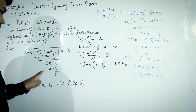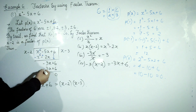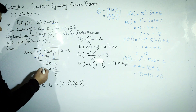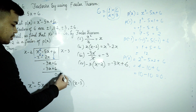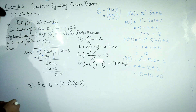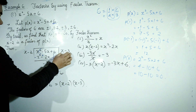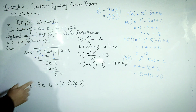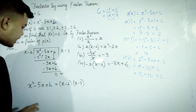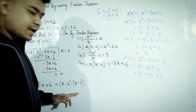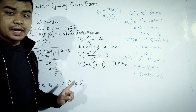We get each phase of the equal function 6. The remainder is zero. So we can factorize x² - 5x + 6 as (x - 2)(x - 3).